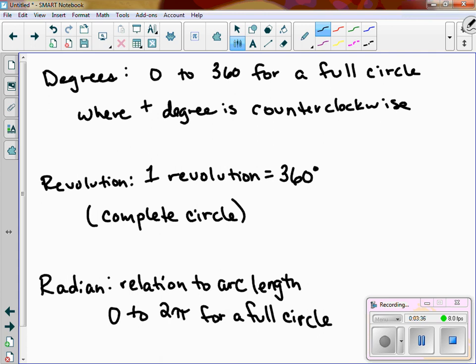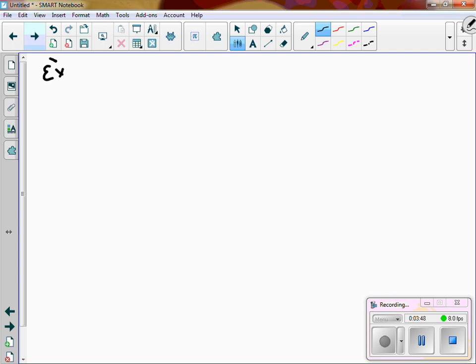So the biggest thing is, now that we know what our different measures are, it's converting between the three. That gets a little tricky. So for instance, let's say that I have 120 degrees. We want to convert to revolutions and radian measure.